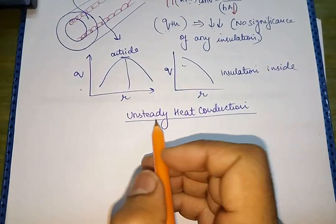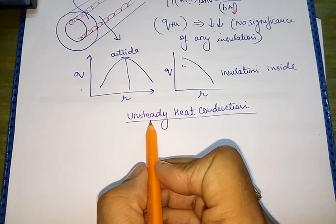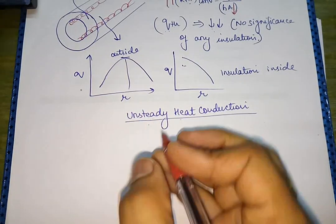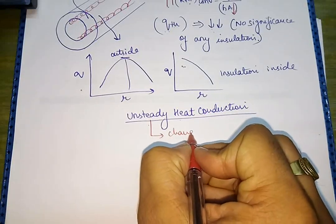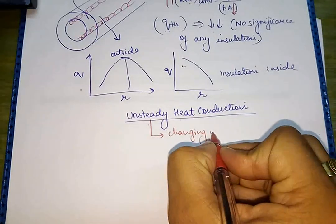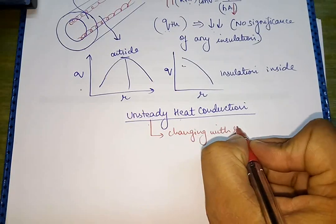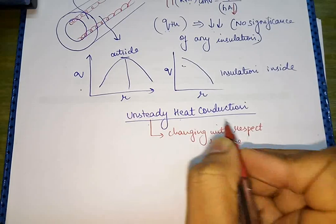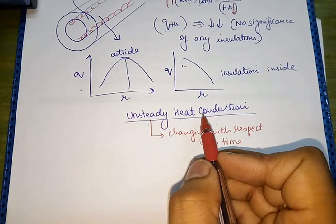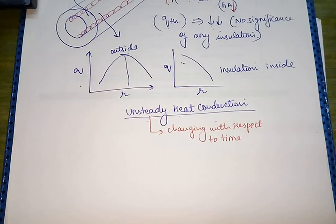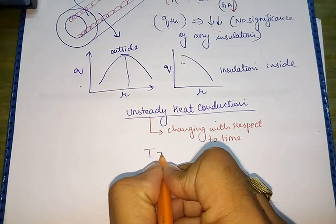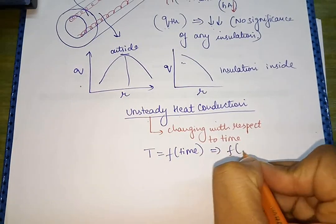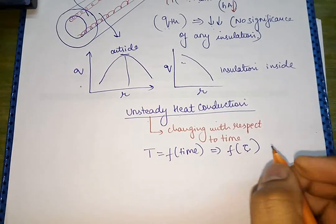Now we will start with the topic of unsteady heat conduction. 'Unsteady' means something which is not steady — jo steady nahi hai — that means it is changing with respect to time. The heat transfer will change with time. So the temperature here is a function of time, or we can write it as a function of tau, where tau represents time.